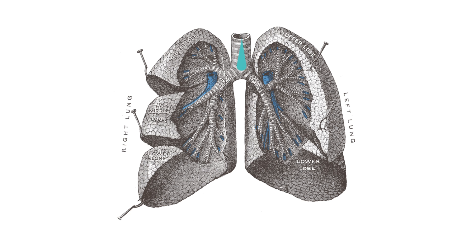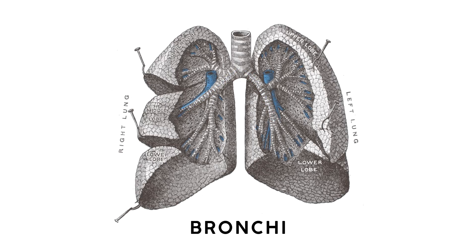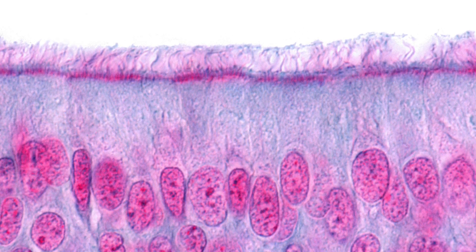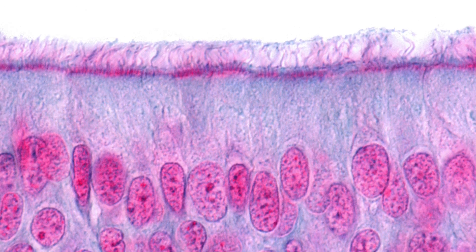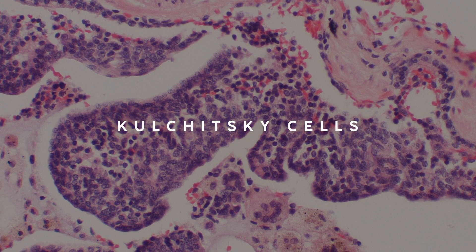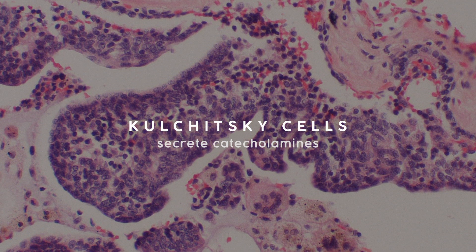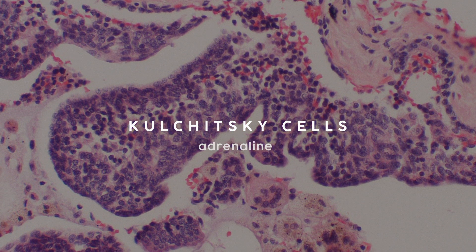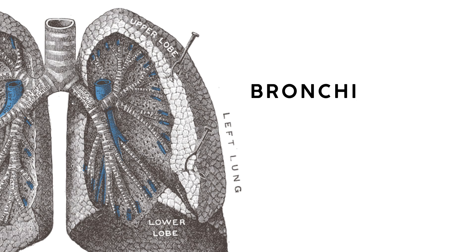The trachea then splits into the two bronchi, and as far as histology is concerned, they're really similar to the trachea — more respiratory epithelium on the inside. Scattered throughout the bronchi, we'll see small clusters of cells that secrete different chemical messengers. These neuroendocrine cells are called Kulchitsky cells, and they mainly secrete catecholamines — those fight or flight hormones like adrenaline — but they also secrete serotonin, calcitonin, and bombesin.